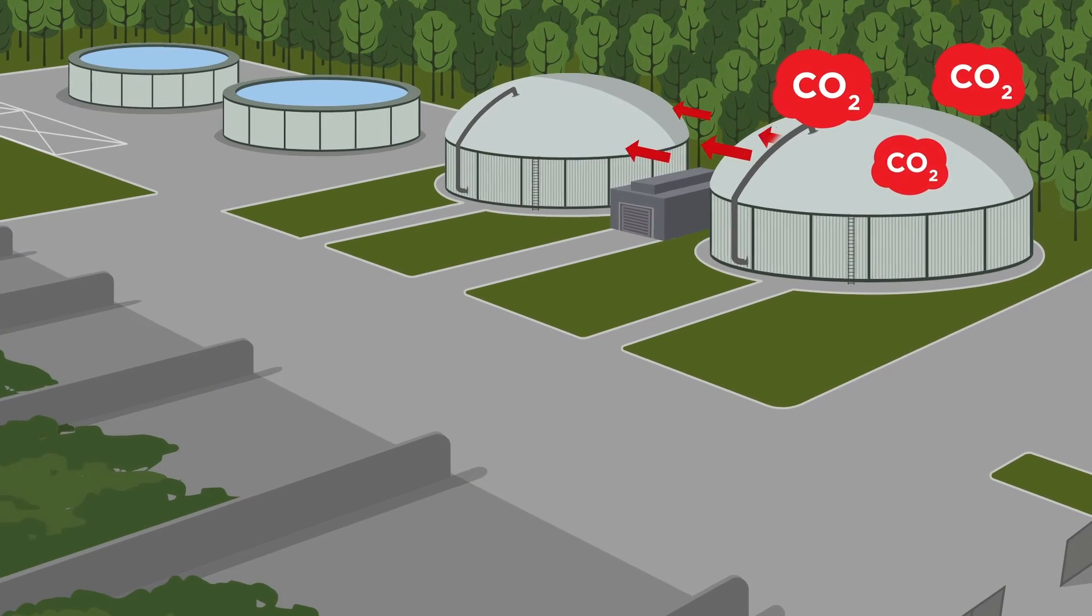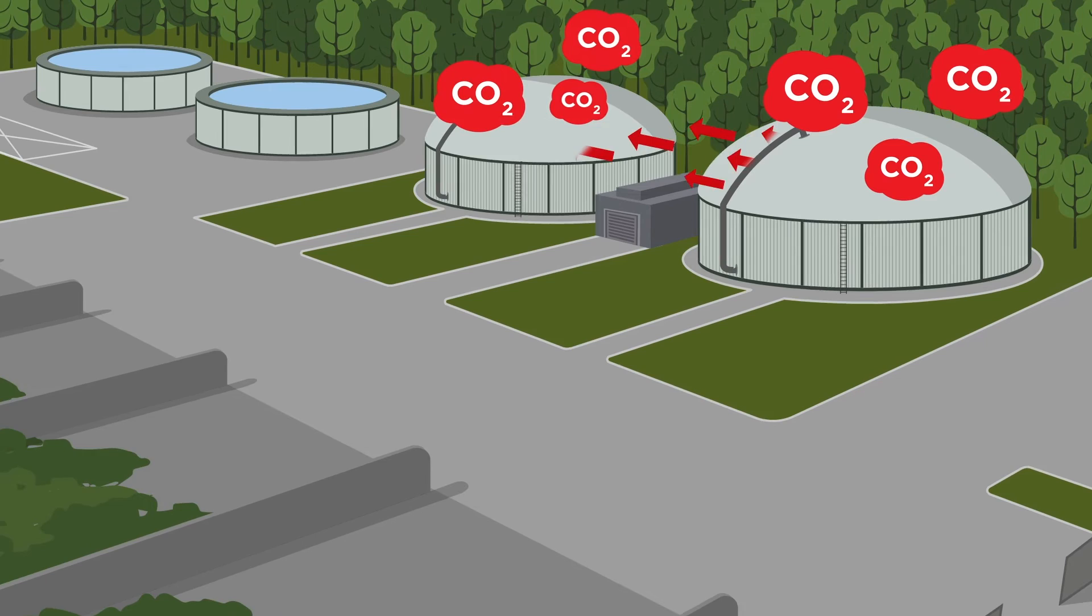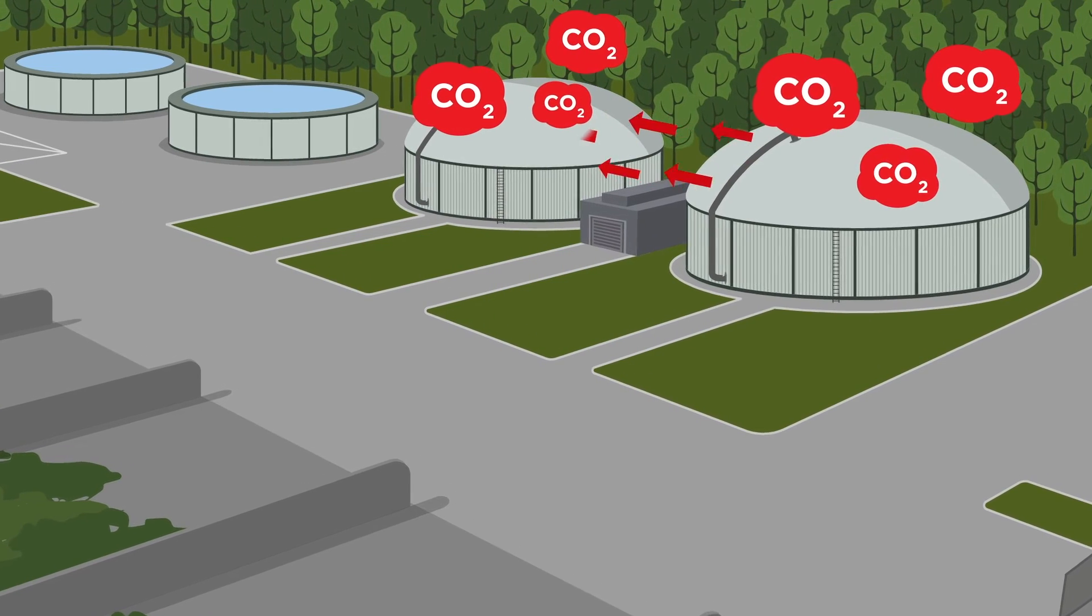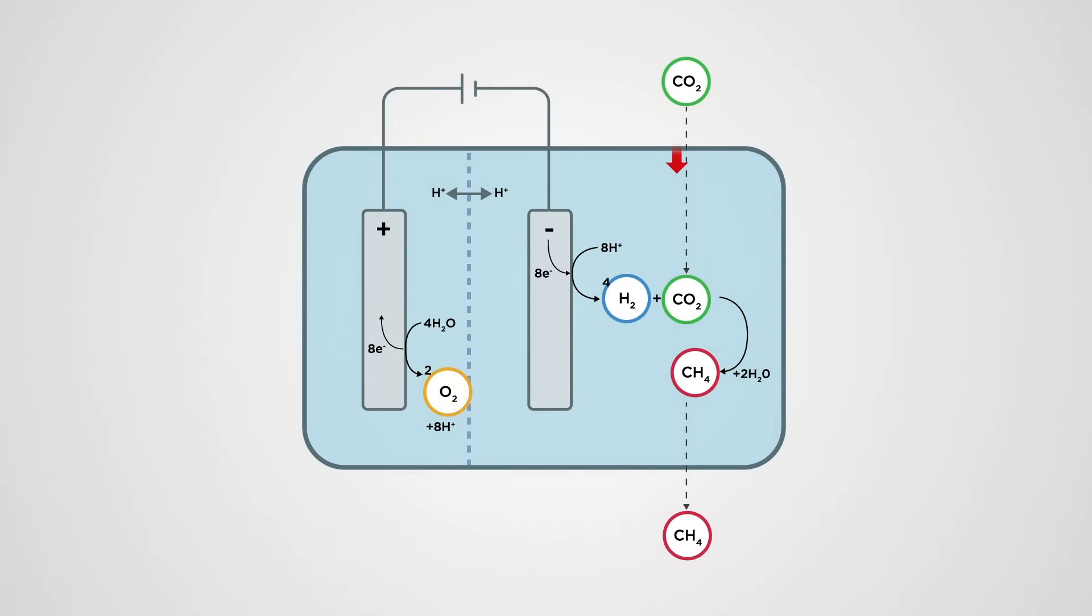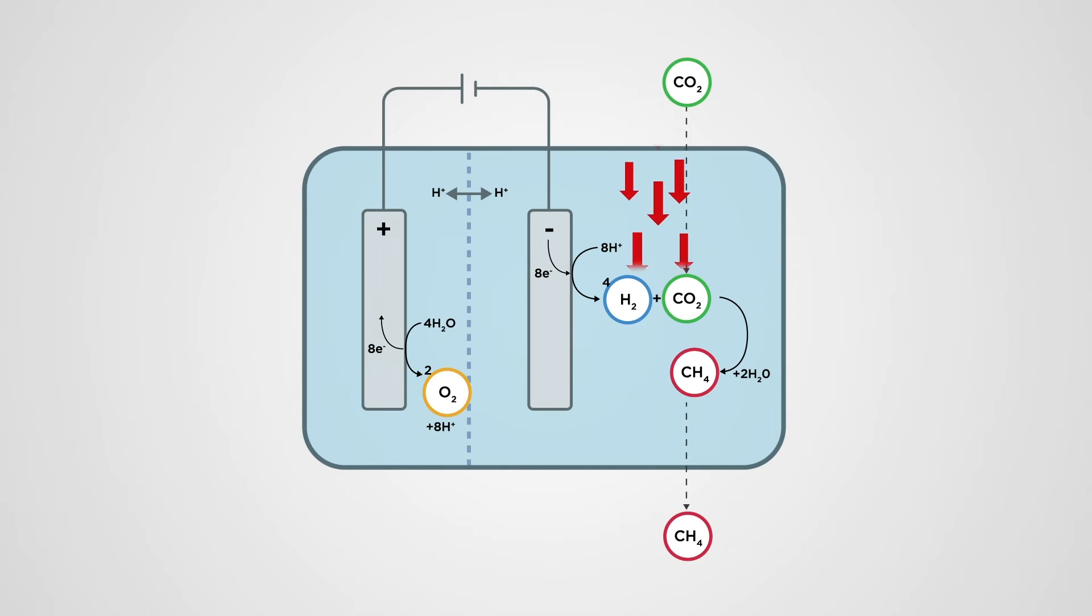A potential application of an electromethanogenic bioreactor is at biogas production facilities where CO2 can be captured and converted to methane, increasing overall biomethane throughput.